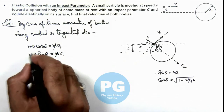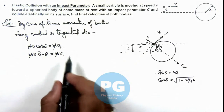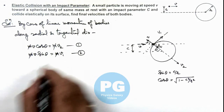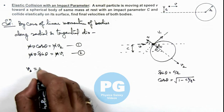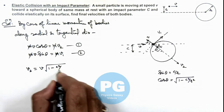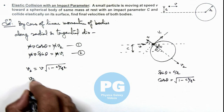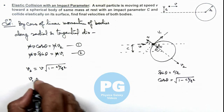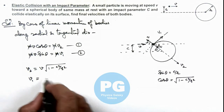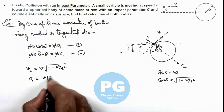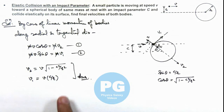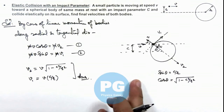Here m gets cancelled out. From these relations — call them equation 1 and equation 2 — we directly get v2 equals v cos theta, which is v times root of 1 minus c squared by r squared. And from equation 2 we directly get v1, the velocity of the particle after collision, equals v sine theta, which is v multiplied by c by r. These are the final velocities of both bodies after collision.